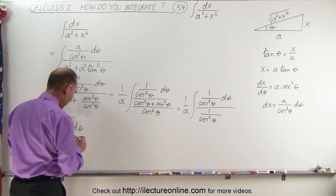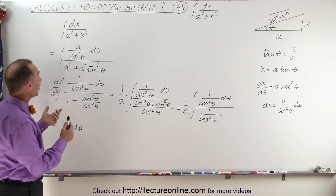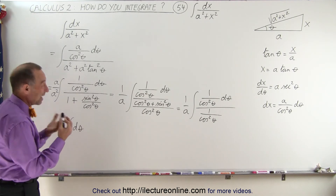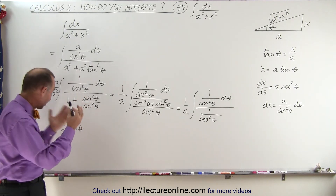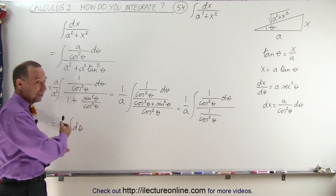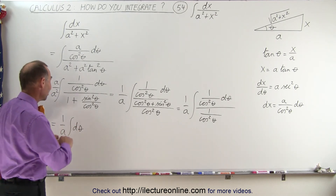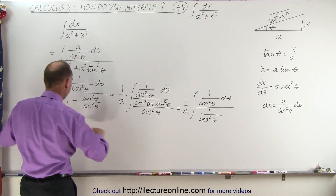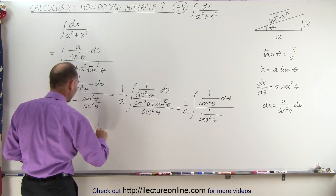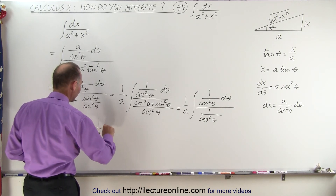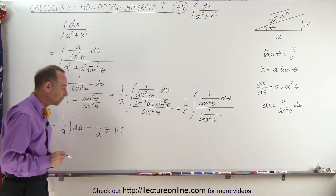Wow — talking about something that first seemed easy, then you can't figure out how to do it, and then when you see the trick, wow, that's really easy. Of course, the integral of d theta is simply theta. So we end up with 1 over a times theta, plus a constant of integration.